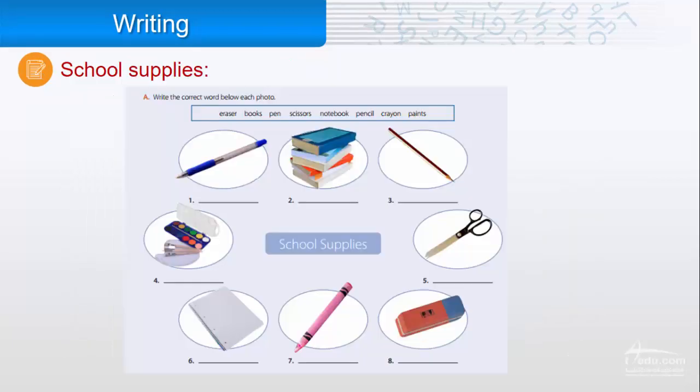School supplies: write the correct word below each photo. Number one: pen. Two: books. Three: pencil. Four: paints. Five: scissors. Six: notebook. Seven: crayon. And eight: eraser.